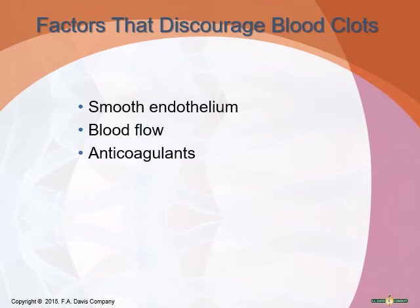If a deep vein thrombosis forms, a piece can break off into the bloodstream as an embolism — a blood clot floating through your vascular system. This is dangerous because it could travel through the heart into the pulmonary circulation and cause a pulmonary embolism, or PE.